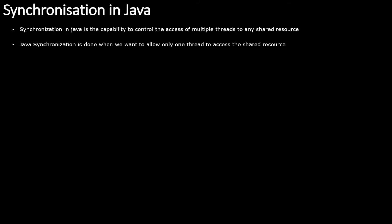Java synchronization is done when we want to allow only one thread to access a shared resource. At any point in time we make sure only one thread is able to access that object. Once it completes its execution, the object is released so other threads can access it. It is mainly used to prevent thread interference — two or three threads fighting for the same object — and also to prevent consistency problems, where a value changed by one thread is not reflected to others. Synchronization is used to avoid these two scenarios.